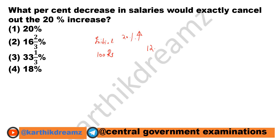Therefore, the increased salary is 120 rupees. Now, they are asking us to decrease the salary — what percentage will cancel out this 20%? The difference in amount is 20 rupees. So here, the 20% increase would be calculated on 100 rupees.